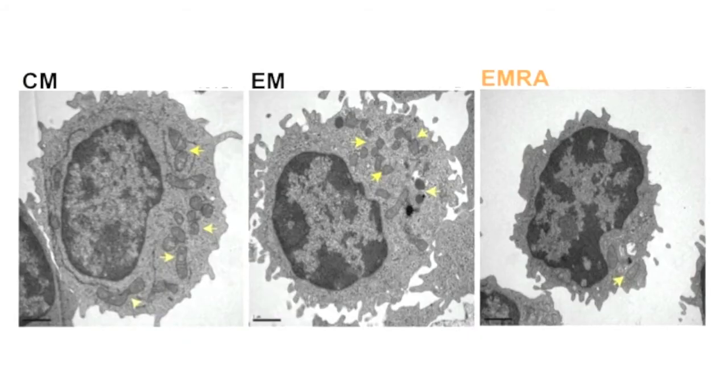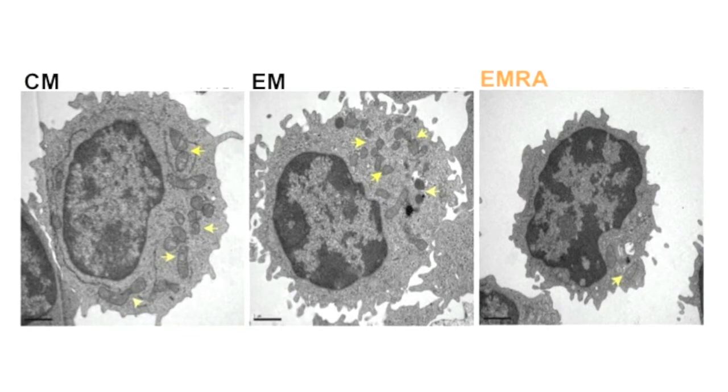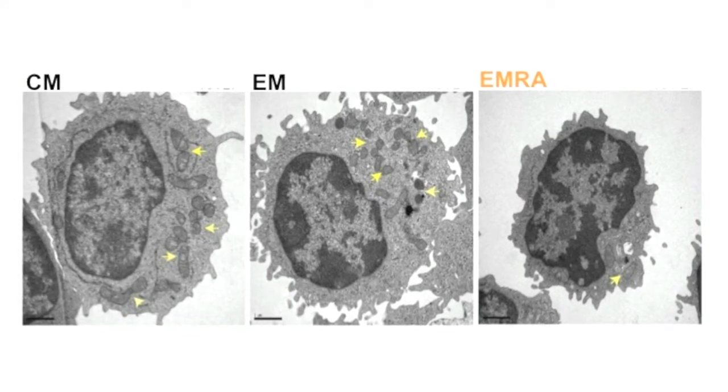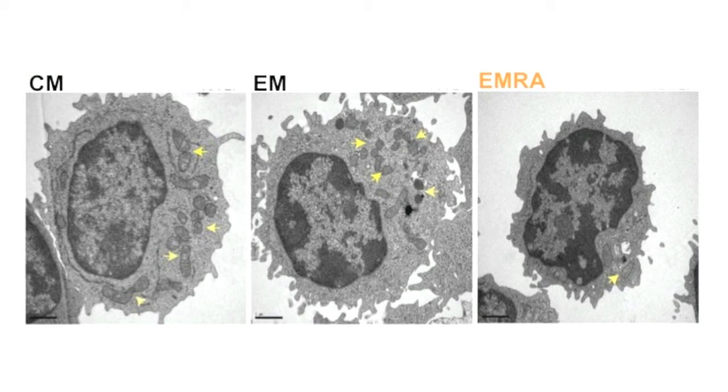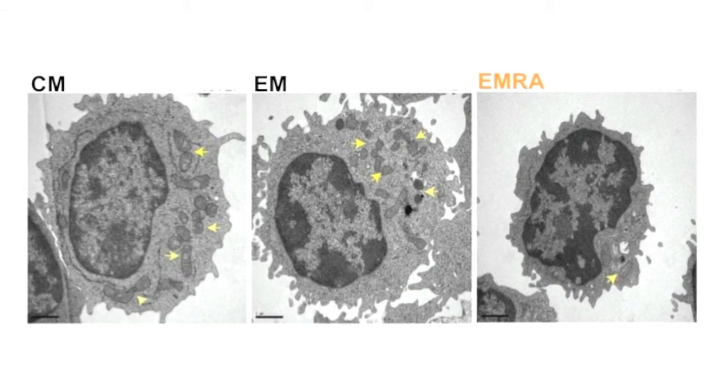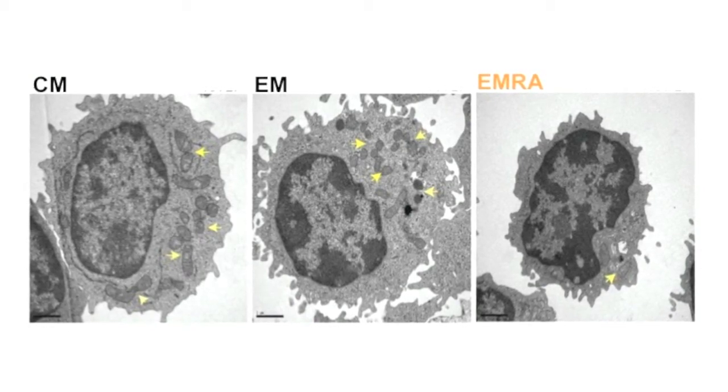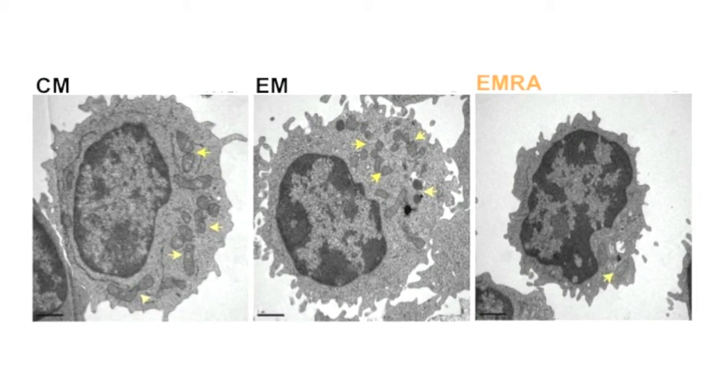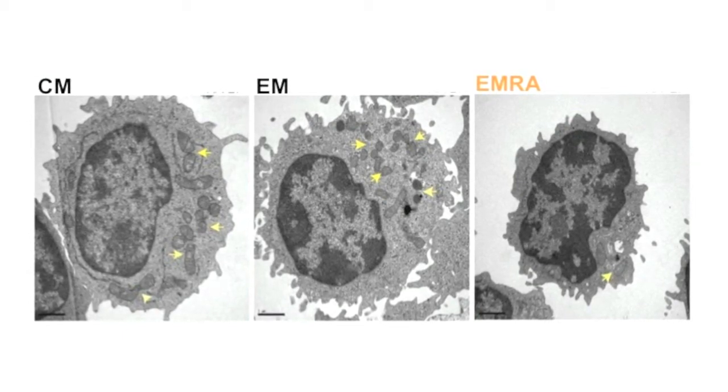In our paper we've used the markers CD27 and CD45RA, and we've defined senescent cells as having the absence of CD27 and the re-expression of CD45RA. These cells are termed EMRA cells — effector memory cells that re-express CD45RA. Using these markers we found that the mitochondrial content of senescent cells is greatly reduced compared to other memory subsets, and using a cationic dye called JC1 we also found that the mitochondria in these senescent cells are less functional than the other memory subsets.